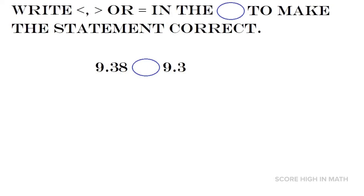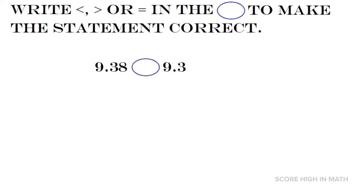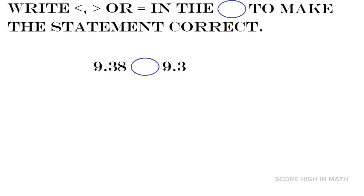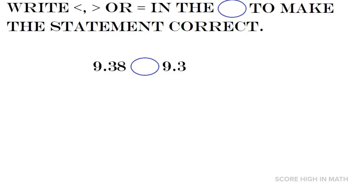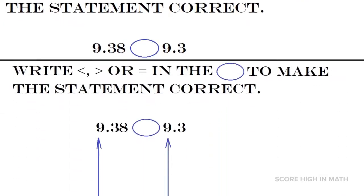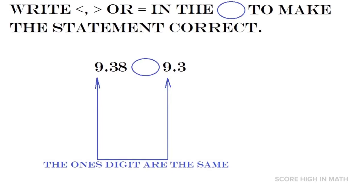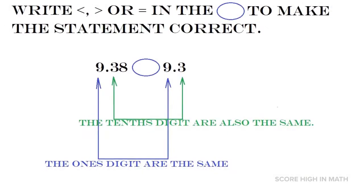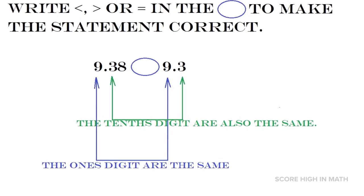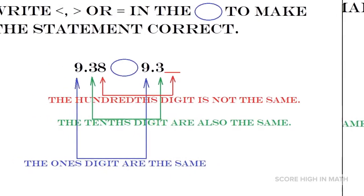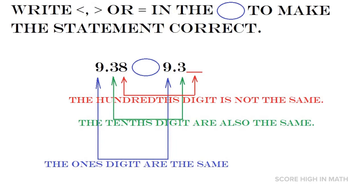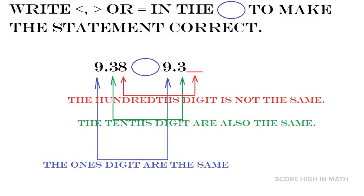Let us work on another example. Write greater than, less than, or equal to in the circle to make the statement correct. We are going to compare 9.38 with 9.3. The tenths digits are the same — both are 3. Looking at the hundredths digit, the first number has 8, while the second number has no hundredths digit.